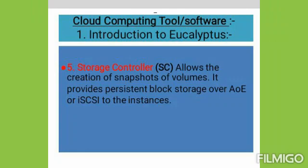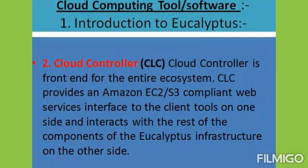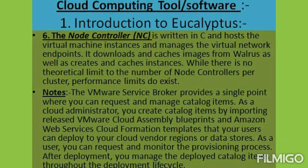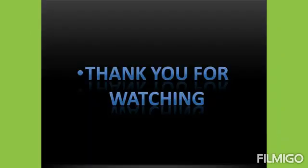Euca2ools are command line tools for interacting with web services that export a REST or query-based API compatible with Amazon EC2 and S3 services. REST stands for Representational State Transfer, which is a software architecture style that defines a set of constraints to be used for creating web services.